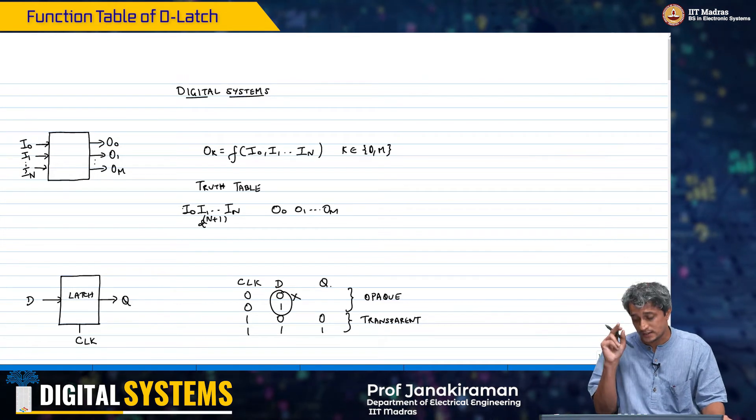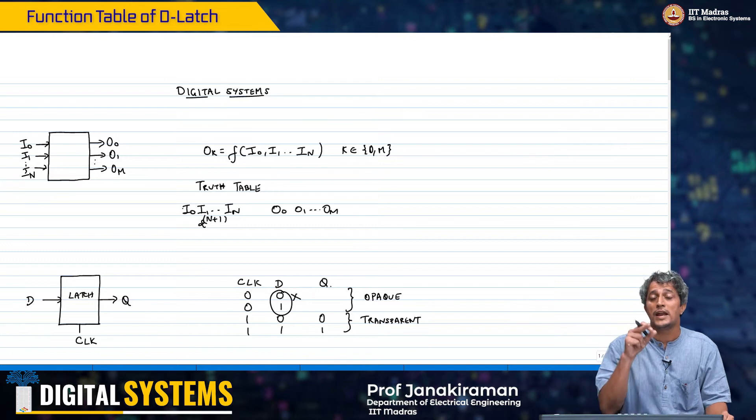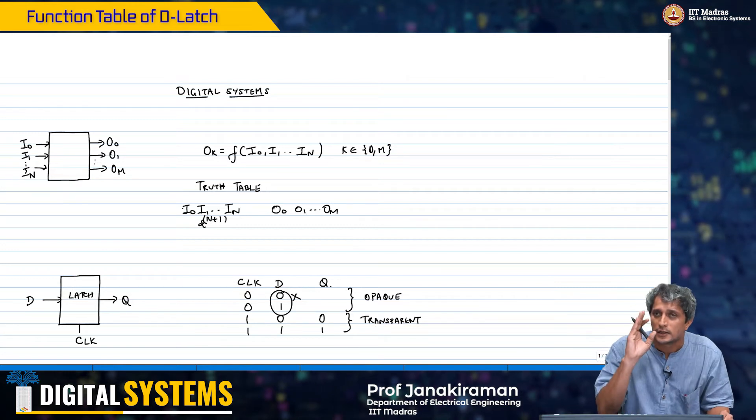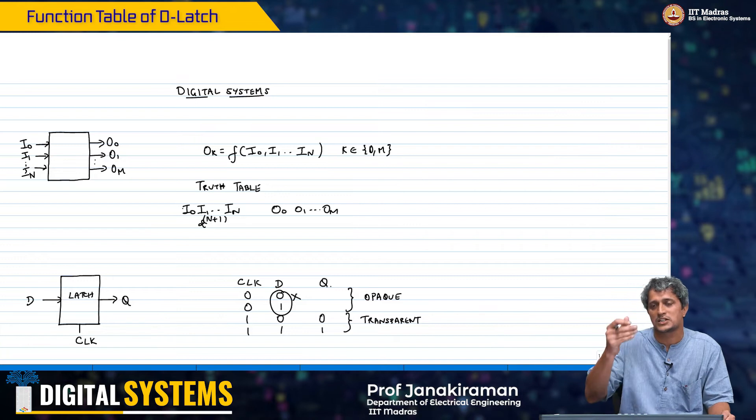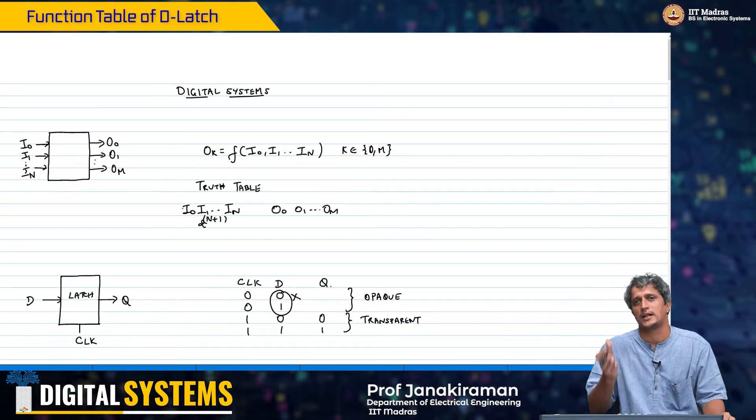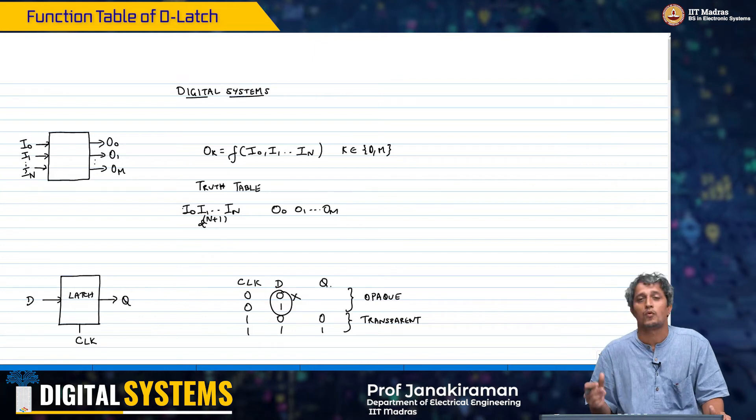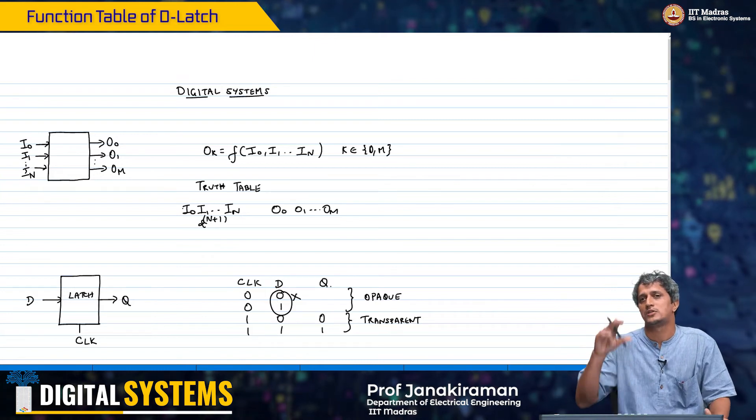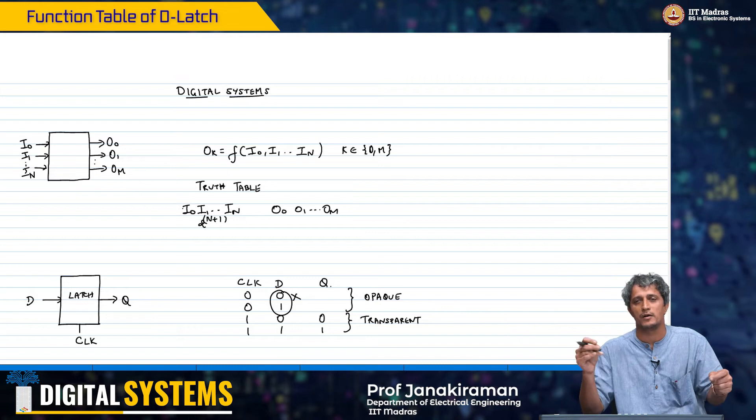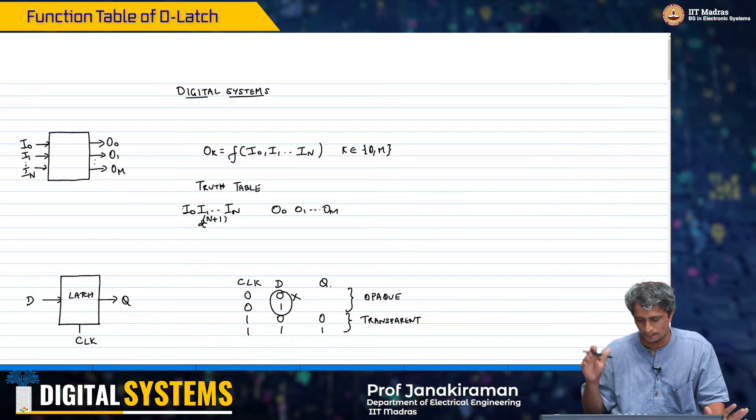What really matters is what was the state of Q when the clock actually shut off, when the latch went from transparent to opaque. That is when it sampled the data. All that matters is what was the state of Q at that time, because that state of Q is going to be held using that cross coupled inverter.